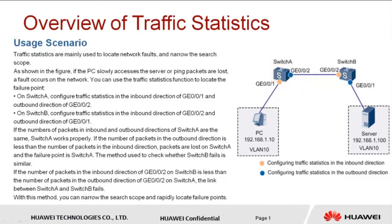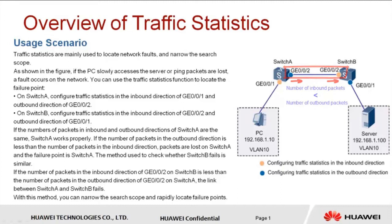To check whether Switch B is the failure point, use the same method. If the number of packets in the inbound direction of GE002 on Switch B is less than the number of packets in the outbound direction of GE002 on Switch A, the link between Switch A and Switch B has failed. With this method we can rapidly locate failure points.